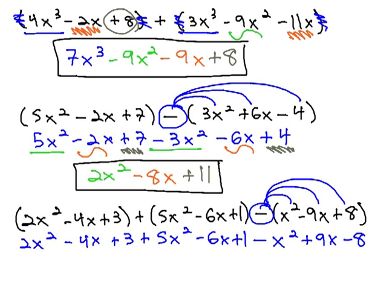We are now ready to combine like terms on this polynomial. 2x², 5x², and negative x² give us 6x².